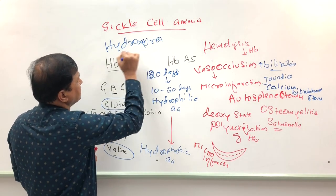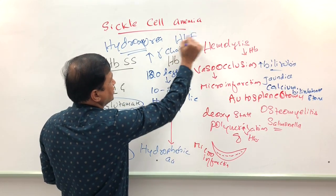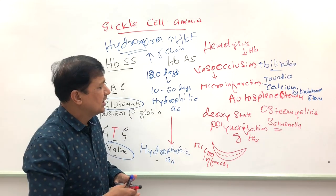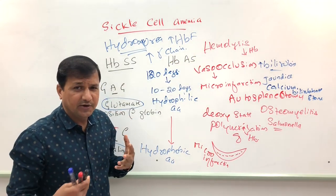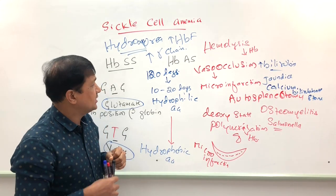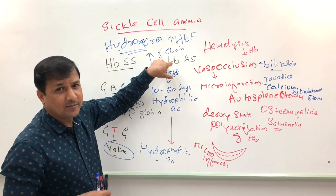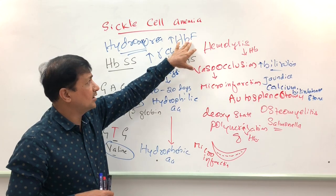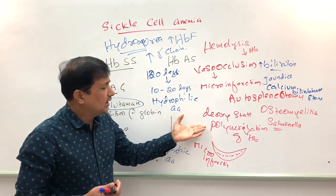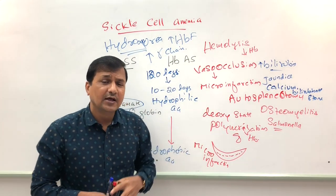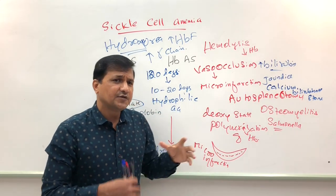Hydroxyurea increases gamma chain synthesis in red blood cells, thereby increasing fetal hemoglobin (HbF) content. HbF (alpha 2 gamma 2) has higher affinity for oxygen than adult hemoglobin and does not release oxygen as quickly. As a result, HbF-containing red blood cells do not polymerize as readily, preventing the sickling process and thereby reducing vaso-occlusion, micro-infarction, and all associated complications.